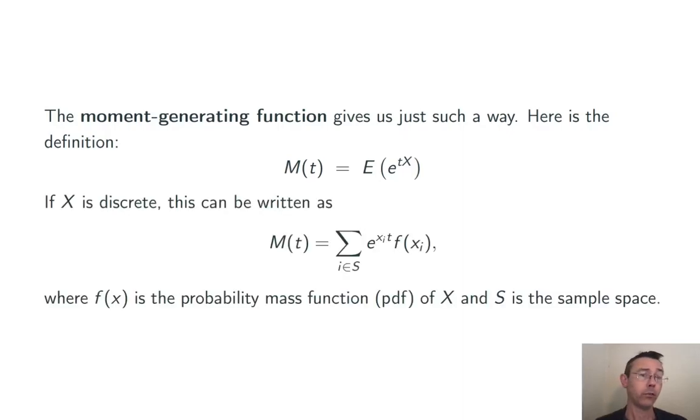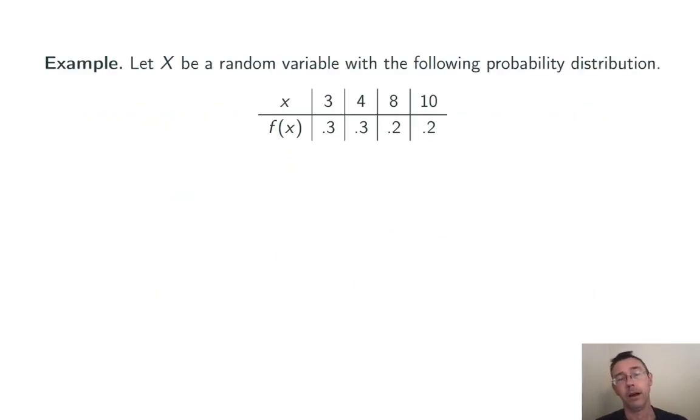If x is discrete we can write this moment generating function M(t) like this: e to the (xi times t) times f(xi), where the xi's range over the sample space of the random variable x and f is the probability mass function. In other words you give me an xi value I give you back the probability of that xi. Again that's pretty abstract. Let's see a specific example.